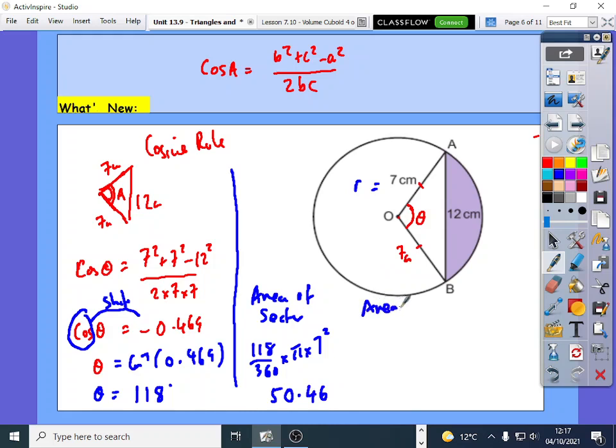Then you get the area of the triangle. And in this case, it's this triangle we got, which is going to be half times 7 times 7 times sine of the angle between them, which is 118.